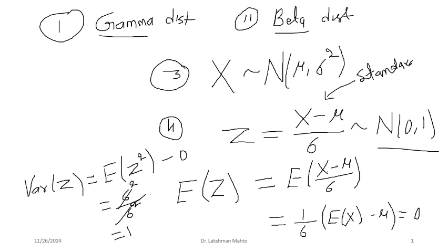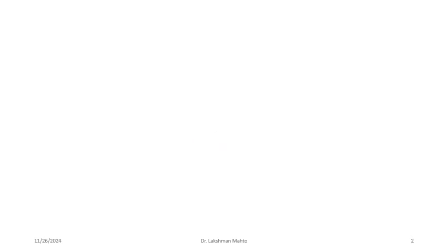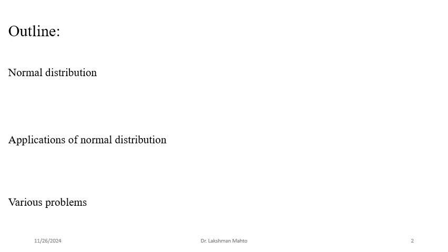Standardization converts a normal random variable into a standard normal random variable. This is the process to come up with an applicable form of a normal random variable, and we will discuss normal distribution further.